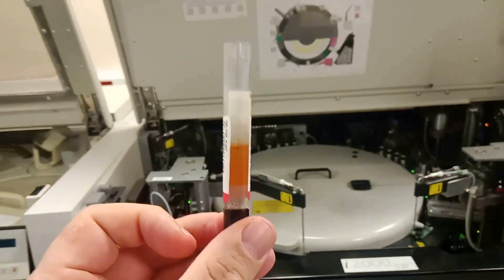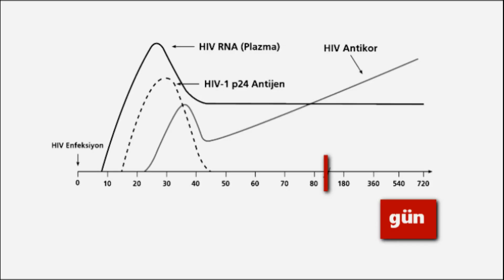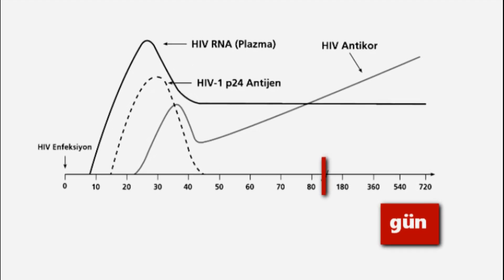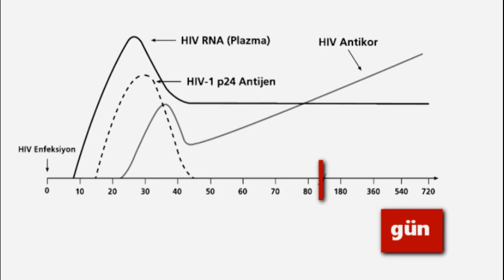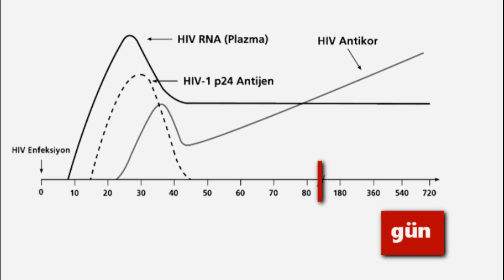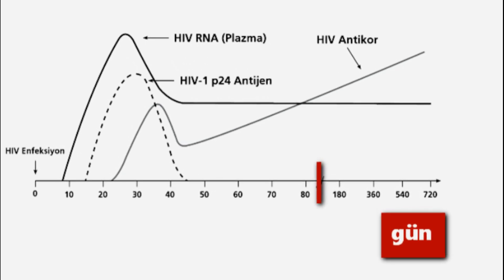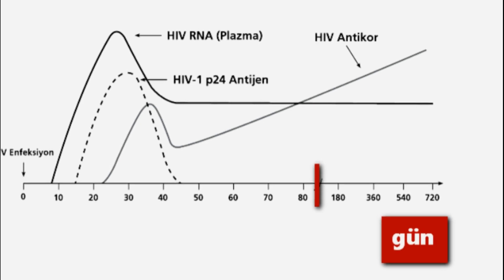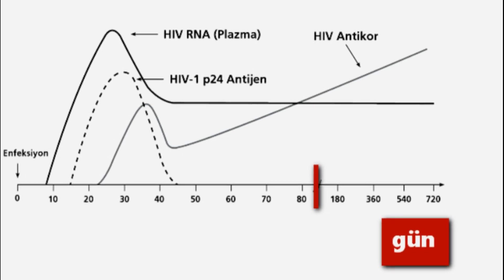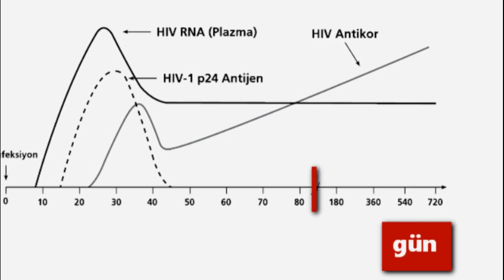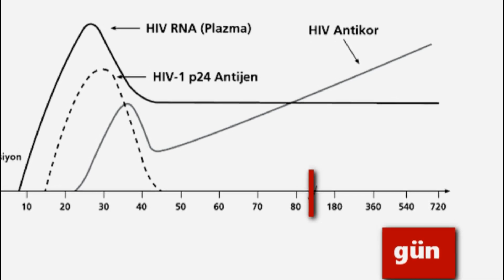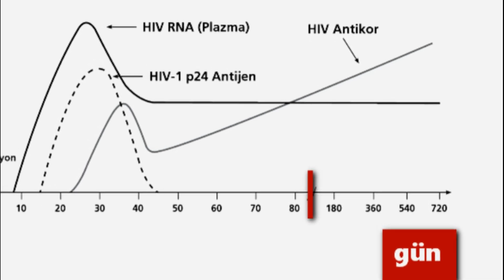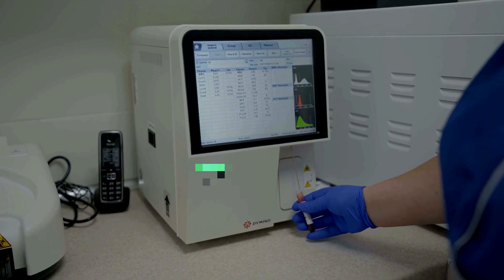The most common causes of an incorrect HIV test result include the timing of testing. After a person contracts HIV, the body does not immediately produce antibodies to fight off the infection. This is why HIV tests have a window period — the period between the person contracting HIV and the time a test can detect its presence in the body.